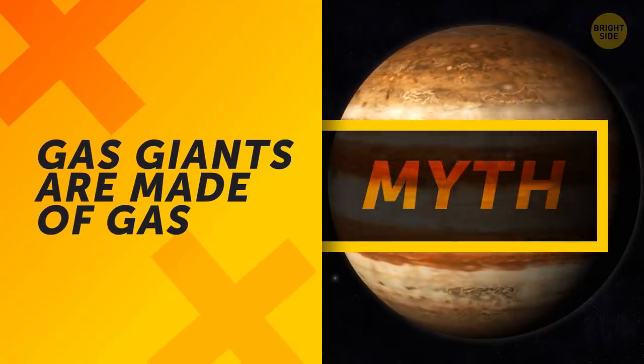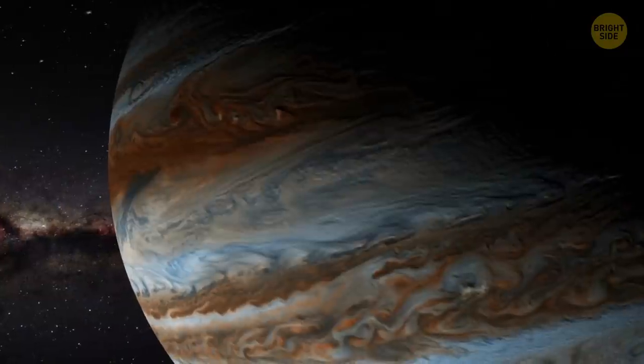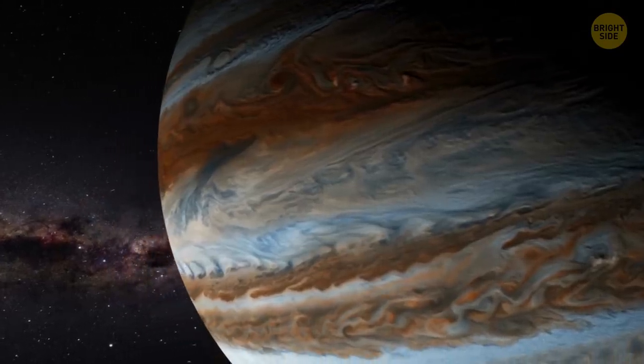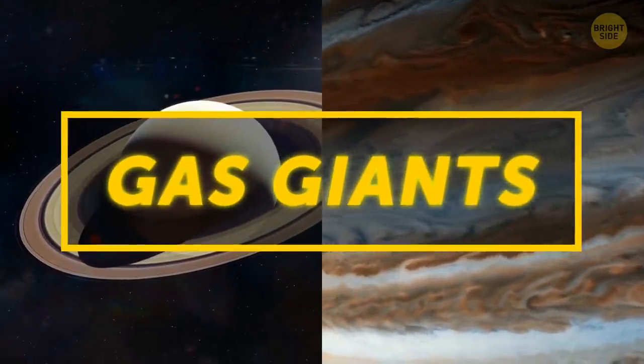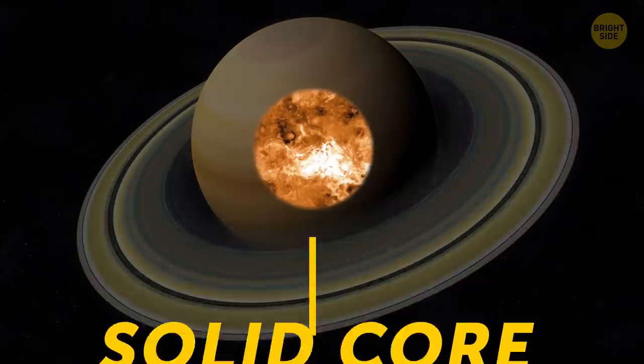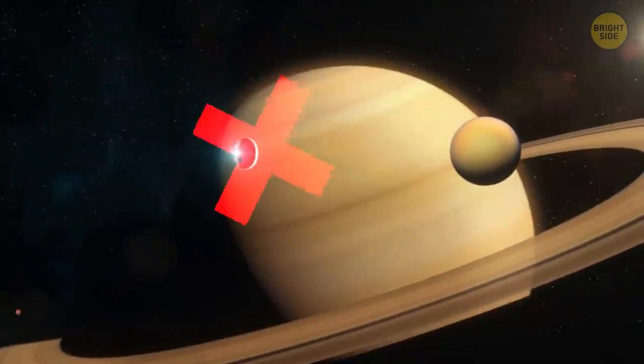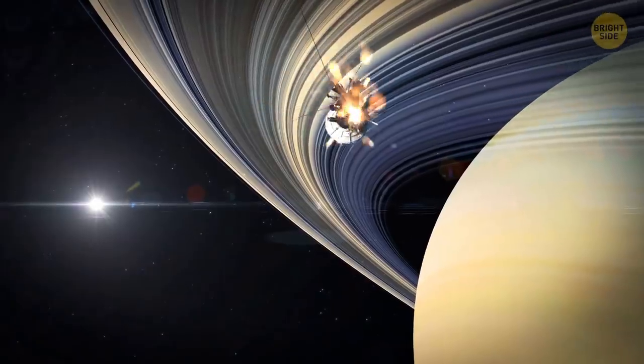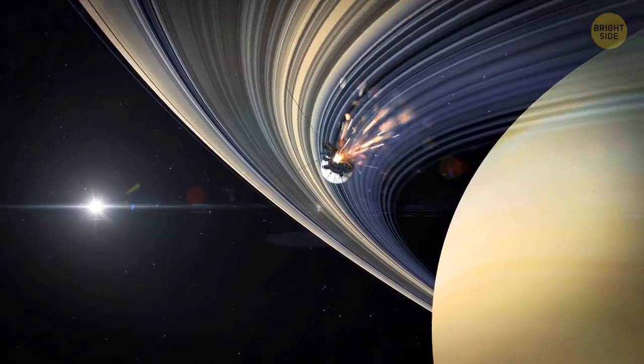Gas giants are made of gas. Seems obvious. I mean, planets like Jupiter or Saturn are called gas giants, but they still have solid cores deep inside them. In theory at least, because it's impossible to study gas giants properly. Any probe would get smashed by immense pressure as soon as it gets too close.